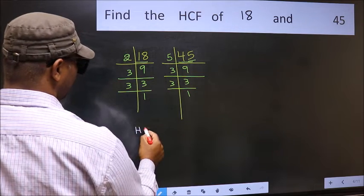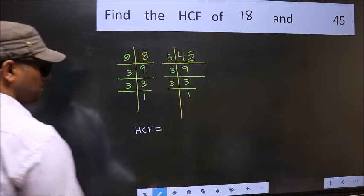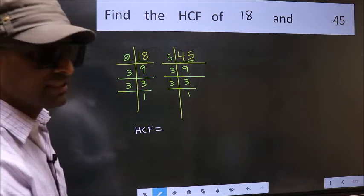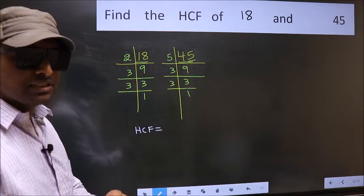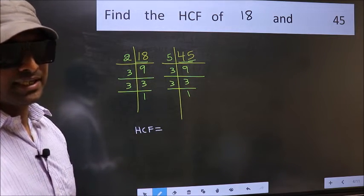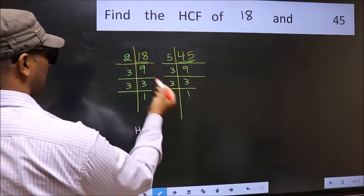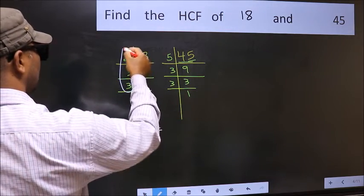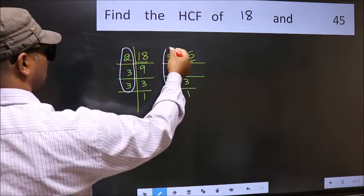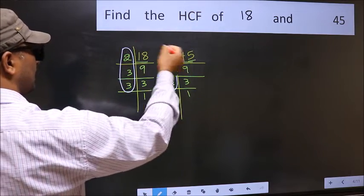Therefore our HCF is the product of the numbers which should be present in these 2 places. That is here and also here. Here and here.